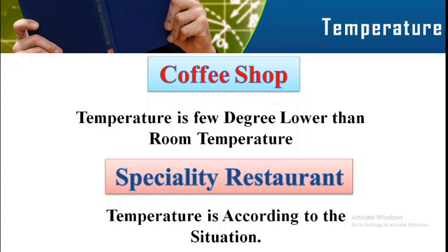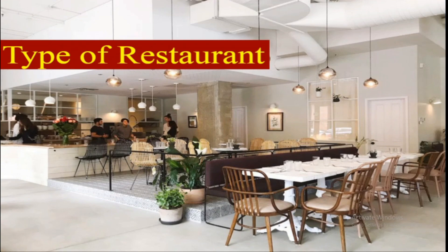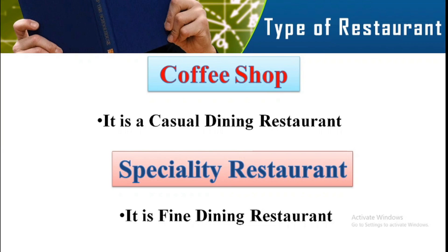The final parameter is the type of restaurant. A coffee shop is a multi-cuisine restaurant serving different kinds of dishes. A specialty restaurant serves only a special type of food based on its theme — whether it is an Indian, Chinese, Japanese, or Italian restaurant, the food and service follow that specific cuisine's theme.